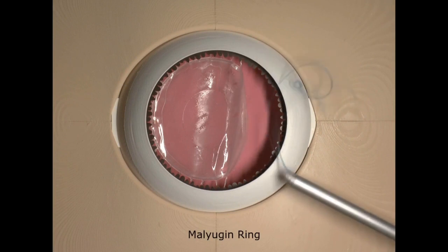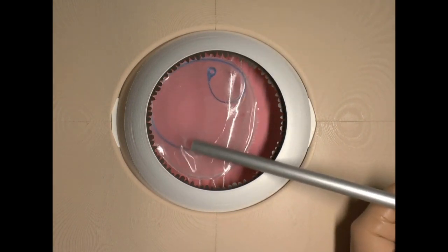The malugins ring is a modification which facilitates the implantation by using an injector.